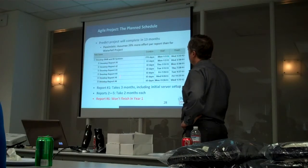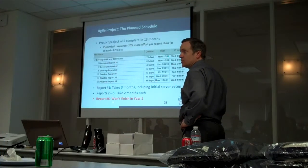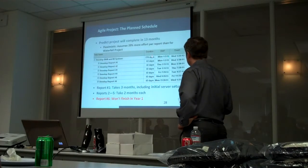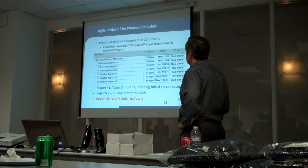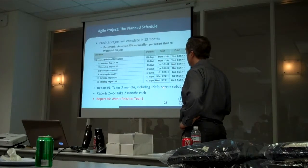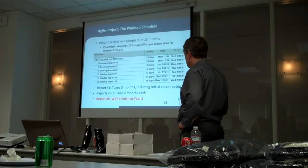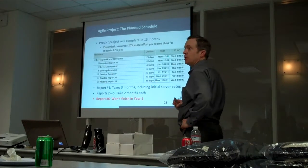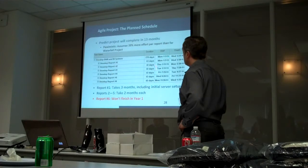30% might be too pessimistic, but let's see where it goes with this number because the results are interesting. The pattern of delivery is very different. We've developed reports one through six in sequence, and those are the things we deliver. Report number one takes three months, including the initial server setup and that first version of the production system. Reports two through five take two months each - not as long because we're not building out the data center. Report number six would also take two months, but it's not going to finish in year one. So the planned schedule of the Agile project doesn't look so good - it's taking substantially longer.